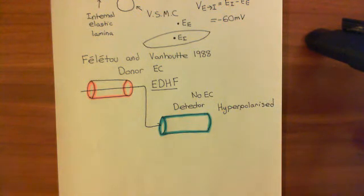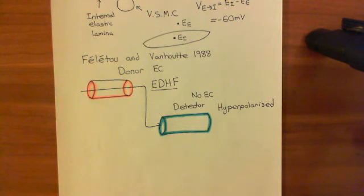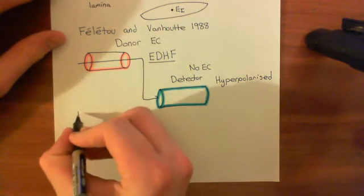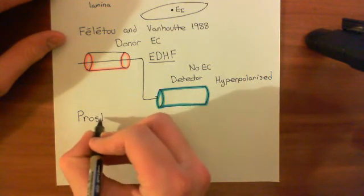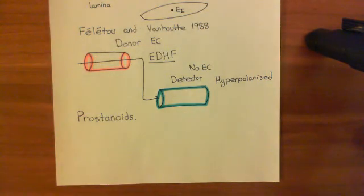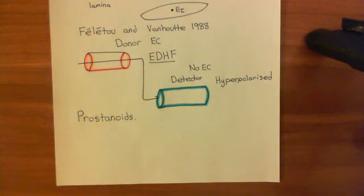That was what Feletou and Van Hoof did in 1988, and they also tried to identify what this factor actually was. The candidate they were considering was some sort of prostanoid. A prostaglandin is a prostanoid, but a prostanoid isn't necessarily a prostaglandin. In the next video, we'll cover cyclooxygenase enzymes and arachidonic acid to understand the biochemistry involved.